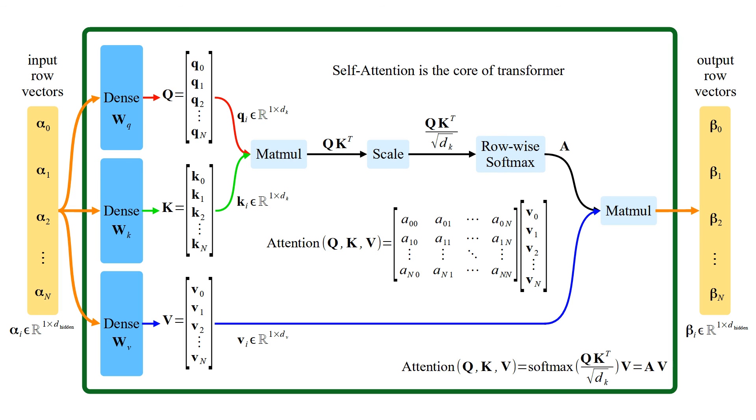Self-attention is the core of transformer. Thanks to self-attention, transformer can process different types of data, text, image, etc., as long as input is represented as a set of vectors.